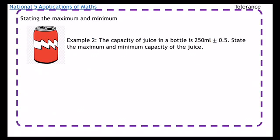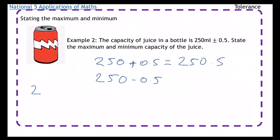Right, example two: the capacity of juice in a bottle is 250 milliliters plus or minus 0.5. State the maximum and minimum capacity of the juice. So with decimals it's a little bit trickier sometimes. The maximum for this one is pretty straightforward - it's just 250 plus 0.5. When we're doing the takeaway, you might want to lay it out just like that just to make sure you don't make any silly mistakes.